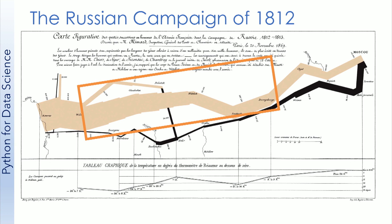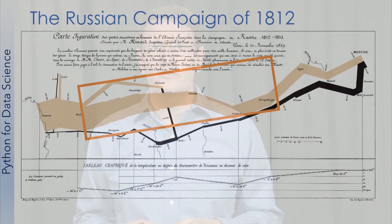The plan was to attack the smaller Russian army near the Russian border, crush it in battle, and end the war. However, the Russian army refused to engage Napoleon's huge army in direct battle. As the Russian army fled back to Moscow, they would destroy the countryside, causing the French army to fall short on supplies — you can see that in the highlighted region of this figure.